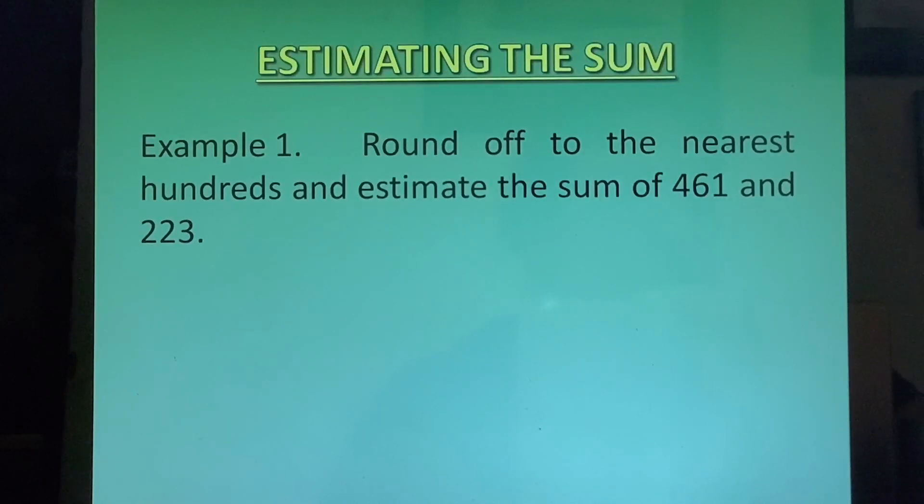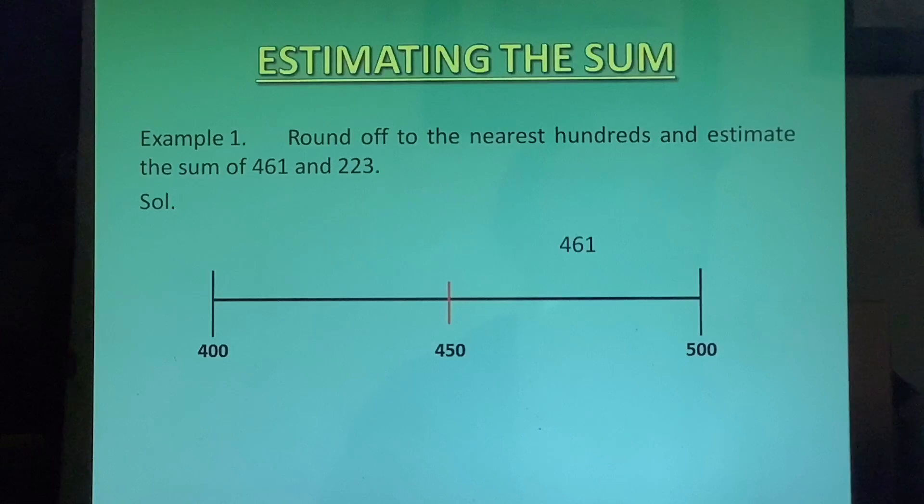Now we will take an example where we will estimate the sum. Example is round off to the nearest hundreds and estimate the sum of 461 and 223. Now 461 if you see the number line we have 400, 450 and 500. 461 is lying on the right side. So it will round off to 500 because it is closer to 500. And 223 is closer to 200, so this will round off to 200.